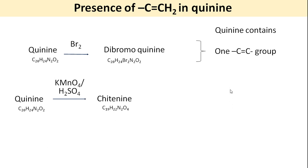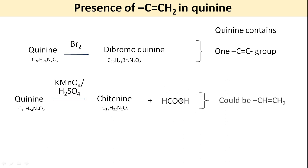Quinine treated with potassium permanganate and sulfuric acid gave ketanine and formic acid. Ketanine has C19 versus quinine's C20, with increasing oxygens, indicating oxidative degradation with carboxylic acid formation. Formic acid is also produced. This indicated an exocyclic methylene group: the CH2 is oxidized to formic acid, while the adjacent carbon becomes a carboxylic acid.